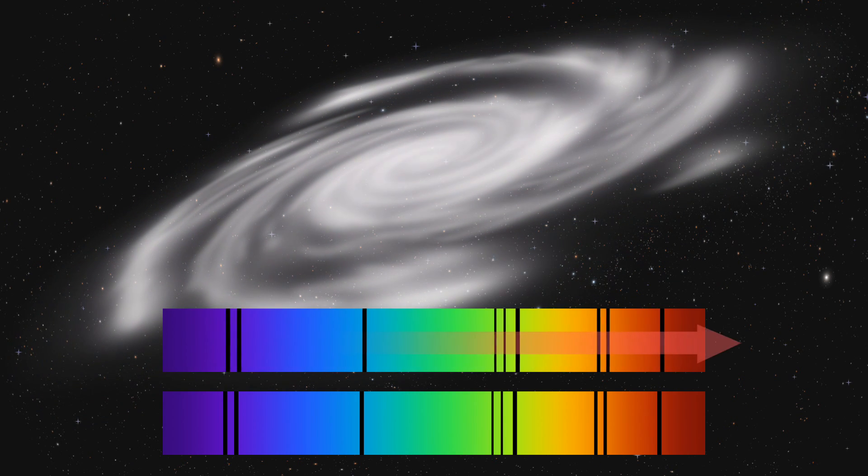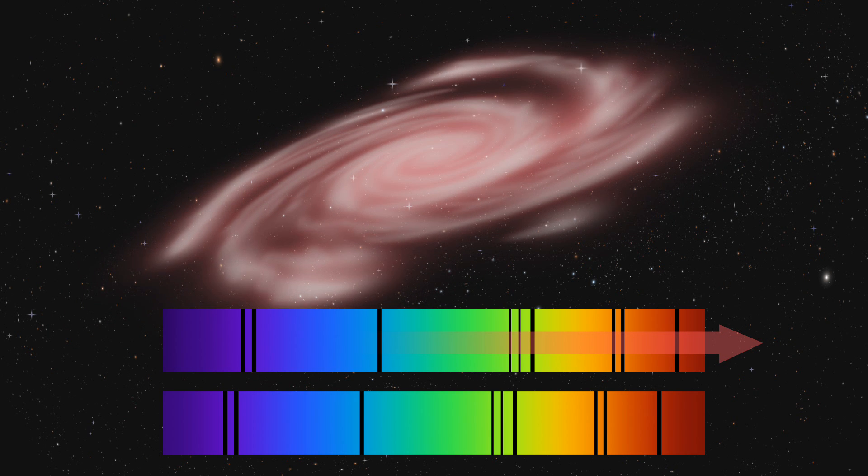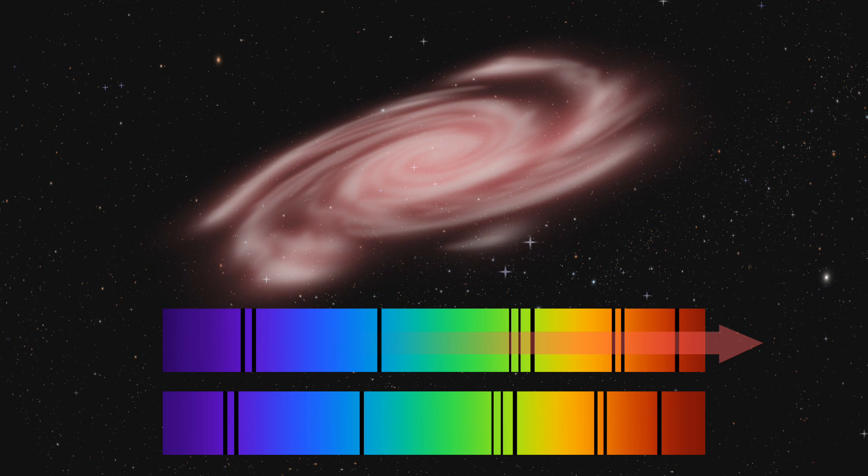If the galaxy was moving away from an observer on the Earth, the spectral lines would shift to the red end of the spectrum. This is known as a red shift.